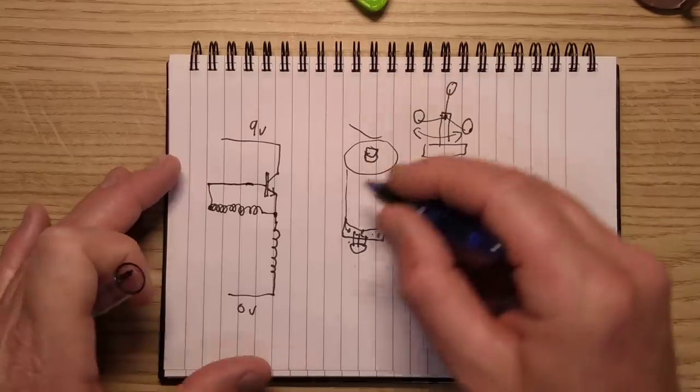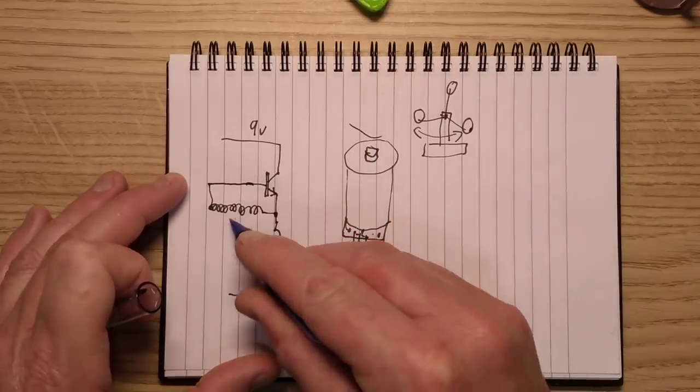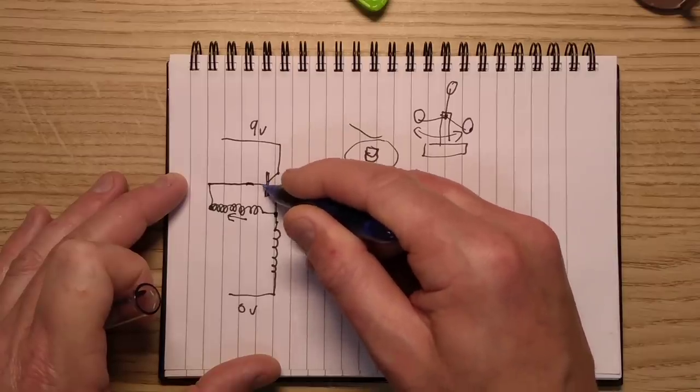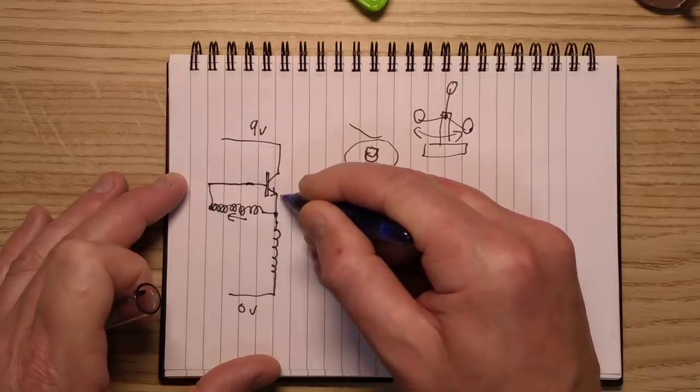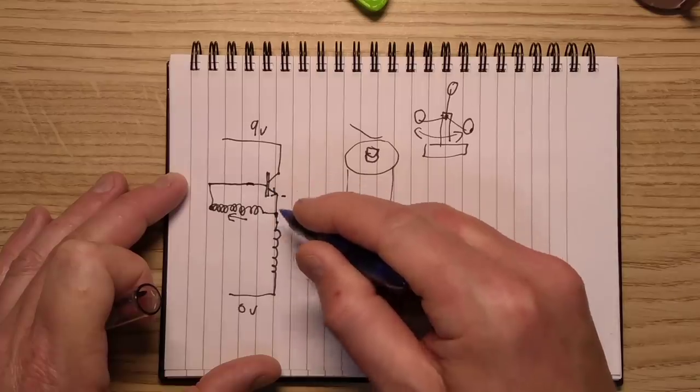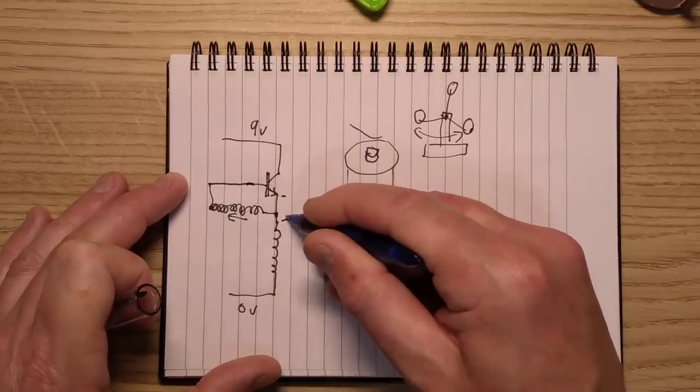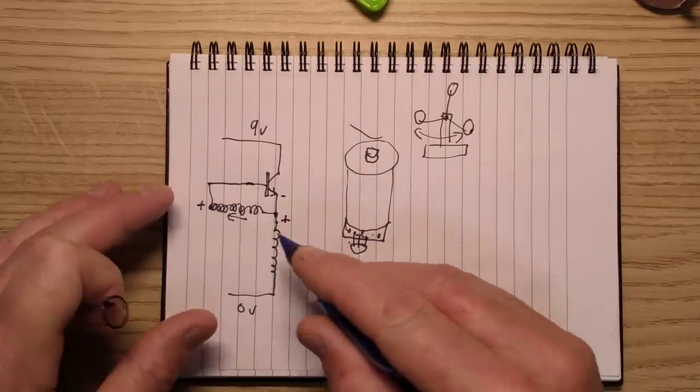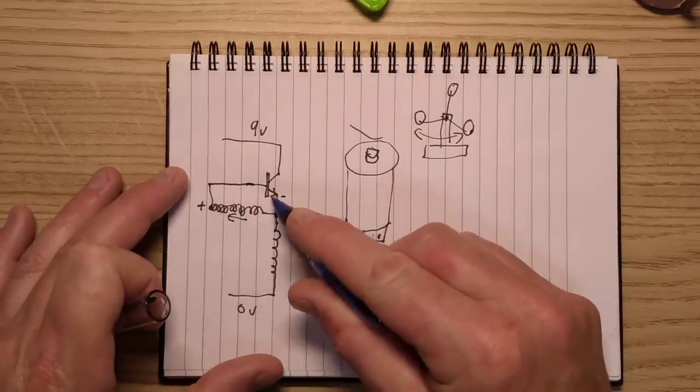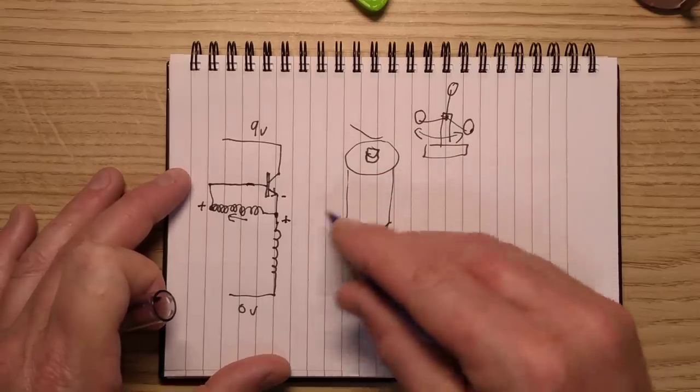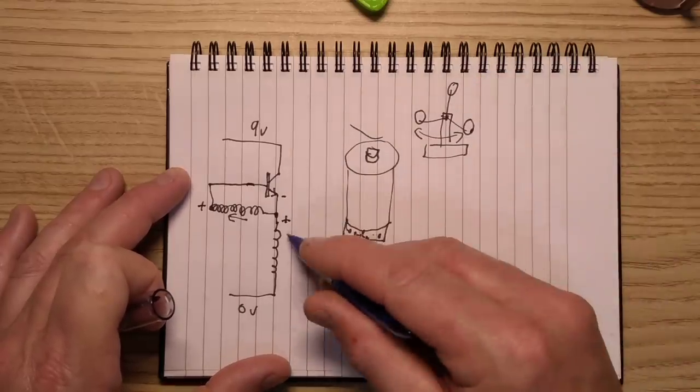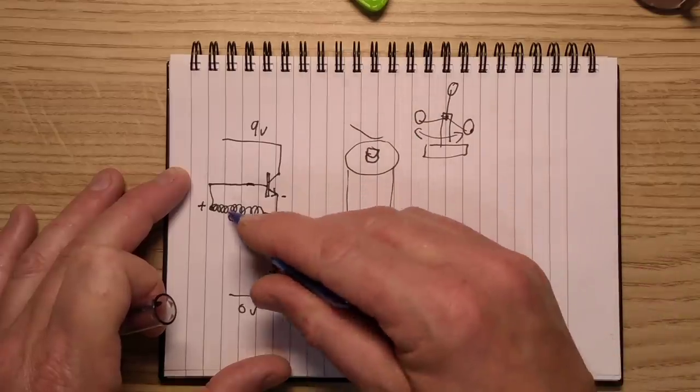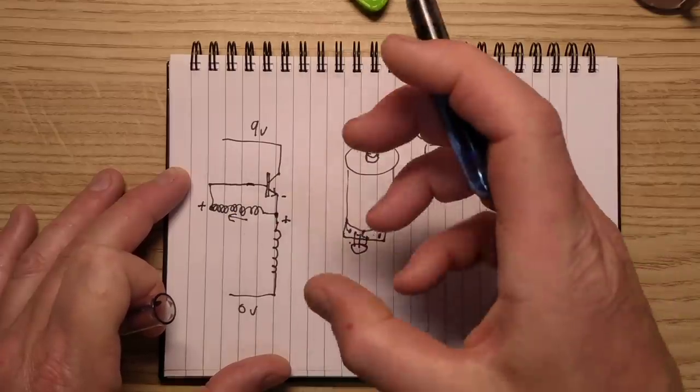And what would happen is this. When the magnet passed this, it would induce current in the coils, notably in this coil. And when it did that, the base of this transistor would be driven positive with respect to its emitter and it would start turning on. When it did turn on, it would pull this end of the coil positive and that would then induce further current in that coil and that end would drive the transistor much harder.